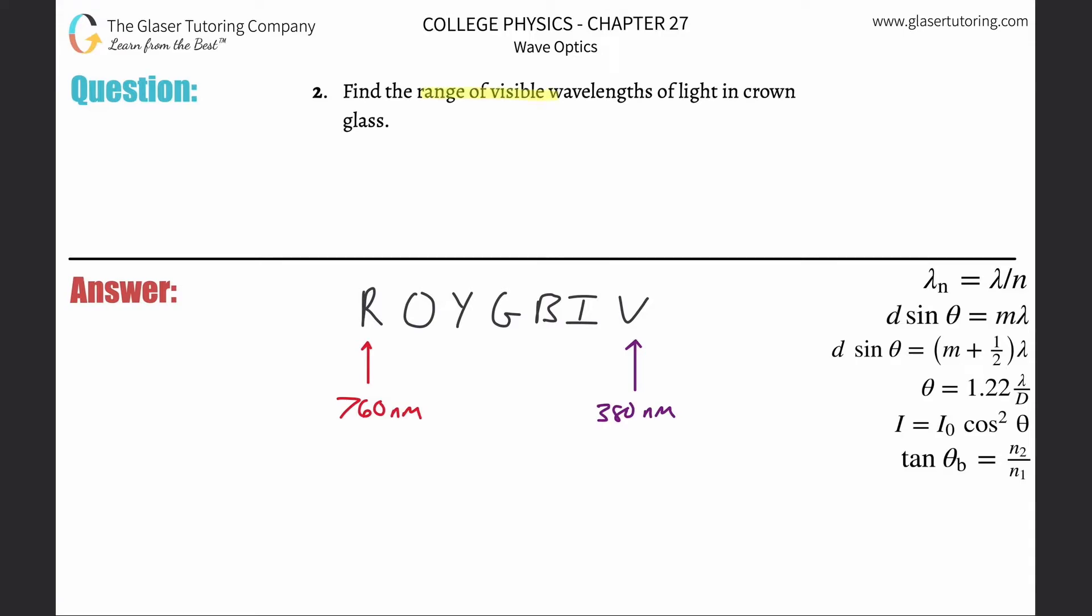Number two: find the range of visible wavelengths of light in crown glass. In terms of the visible wavelengths here, we have to think about the rainbow—red, orange, yellow, and all the way down to violet.